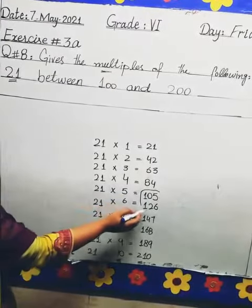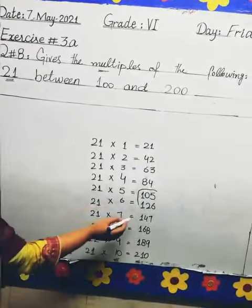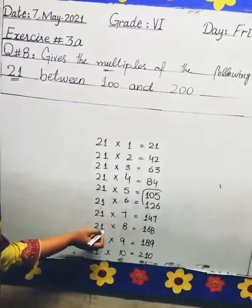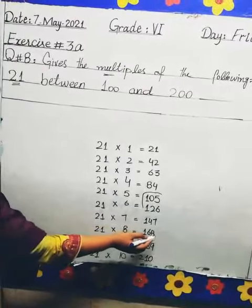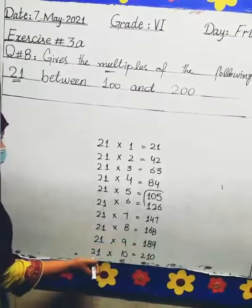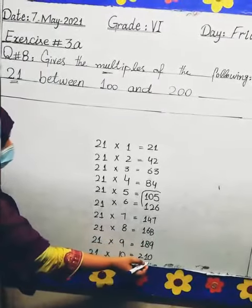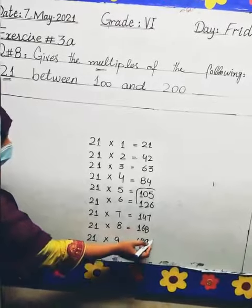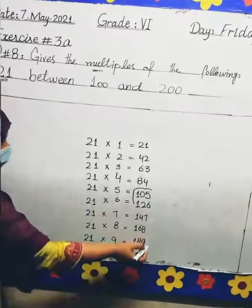21 × 6 = 126, 21 × 7 = 147, 21 × 8 = 168, 21 × 9 = 189, 21 × 10 = 210. Now 210 is above 200.